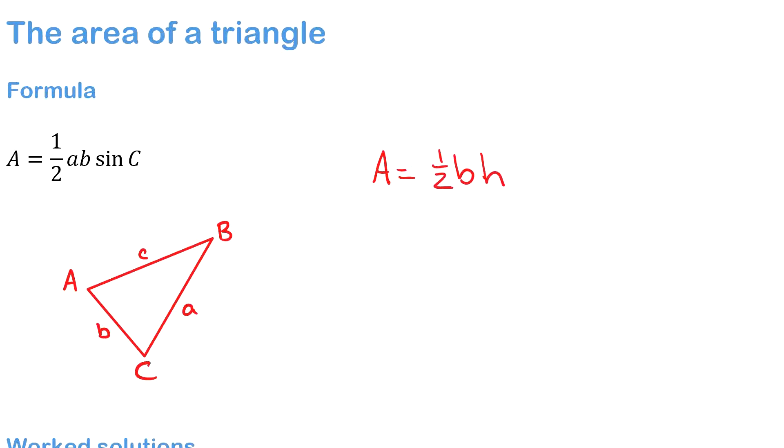Now that is all good, but sometimes you can't do that and then we use this second formula that I'm about to show you. This second formula is A = 1/2 ab sin C.